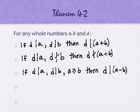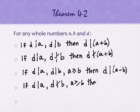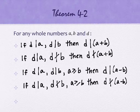Property four: if D divides A and D does not divide B, with A greater than or equal to B, then D does not divide A minus B. Example: three divides six, three does not divide four, six is bigger than four, and six minus four equals two. Three does not divide two.